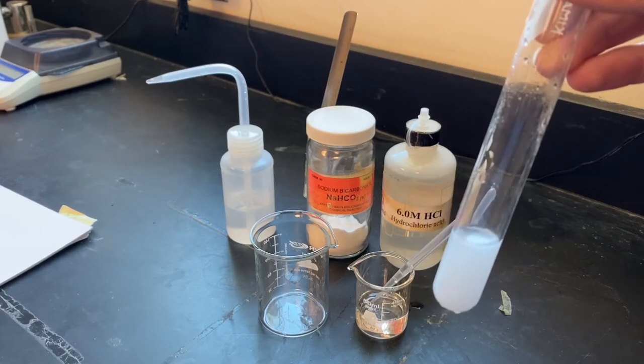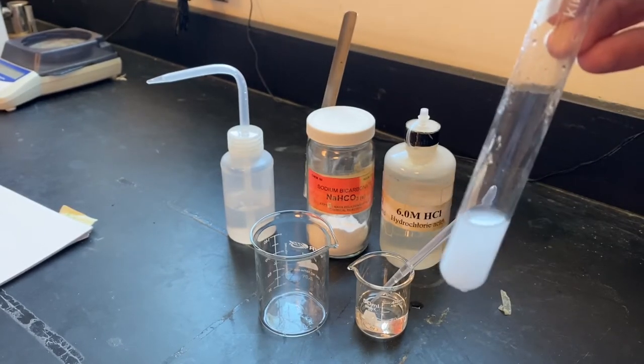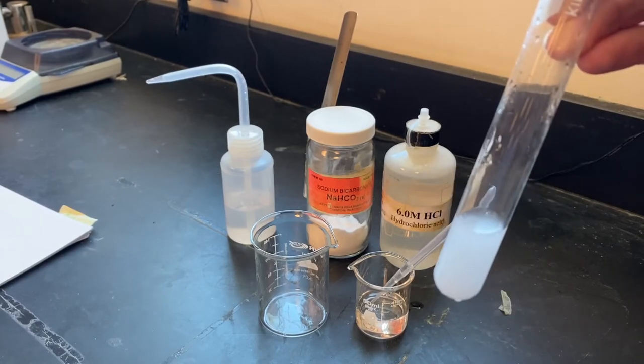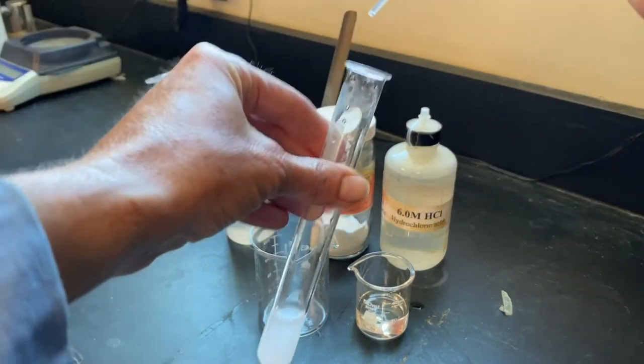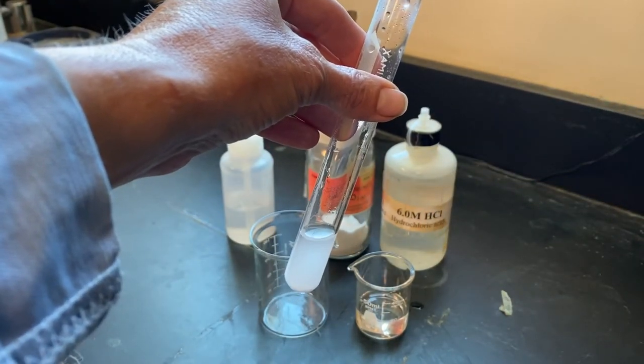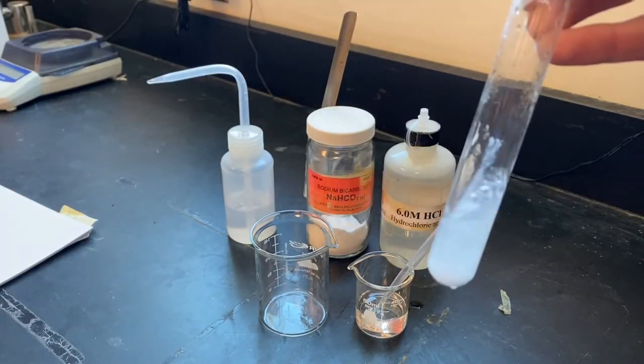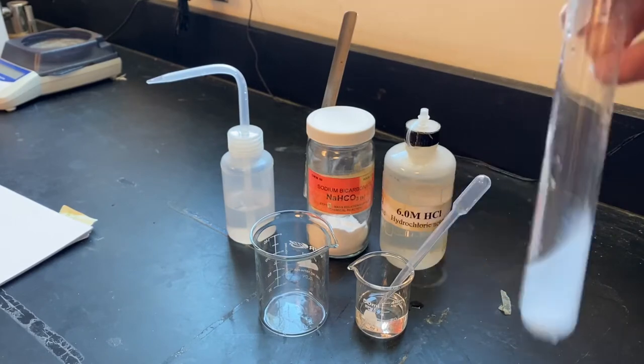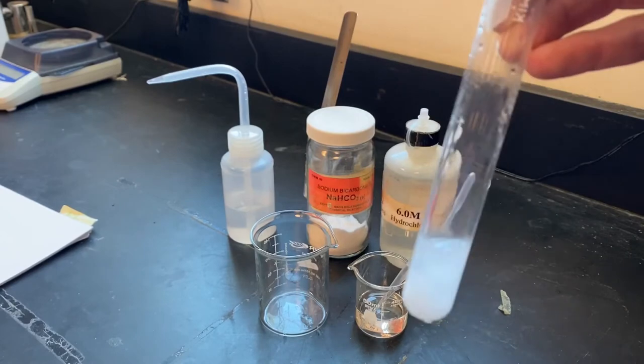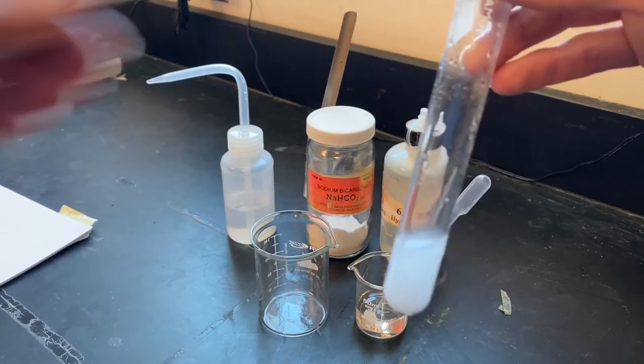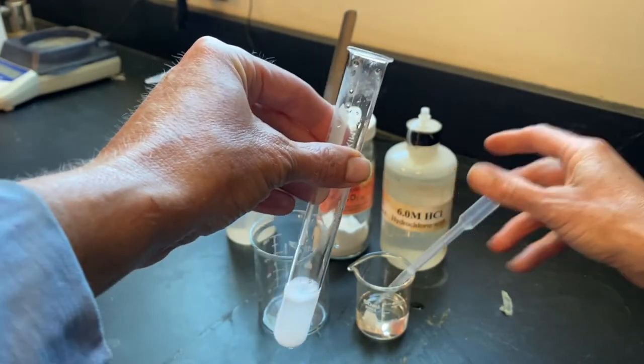I'm swirling the test tube as I add the HCl to give the chance for the sodium bicarbonate to react. If I didn't swirl and I added the HCl I wouldn't see bubbles and then I would swirl and the bubbles would be produced. Let's add one drop. Not a whole lot of bubbles but when I swirl then you can see those bubbles form. In order for a chemical reaction to occur the reactants have to come in contact with each other and collide.